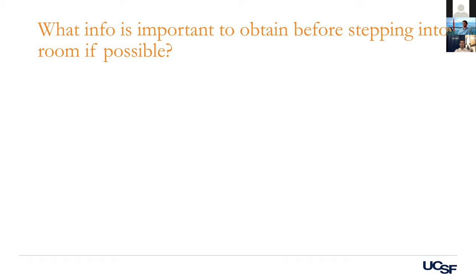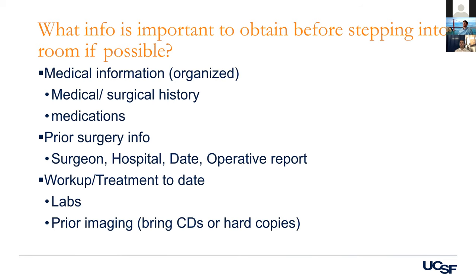Past medical history and past surgical history are important if you have access. Look at imaging and labs beforehand — not all these patients are going to be primary OA patients. Try to see all their imaging before you go in so you're not digging for stuff while talking to the patient, and you can get an idea of what's been done and what hasn't.